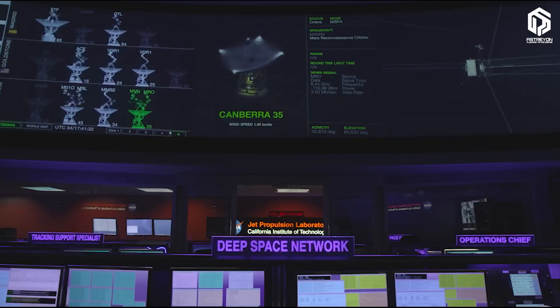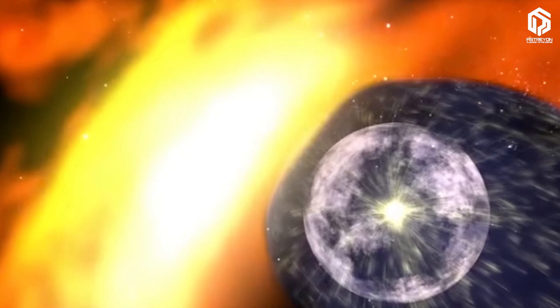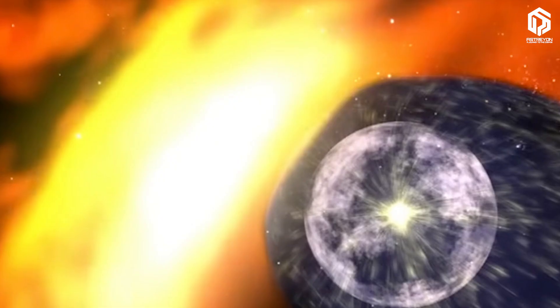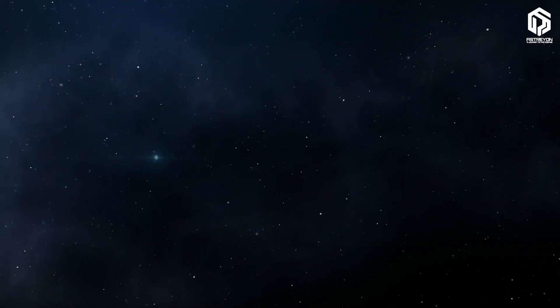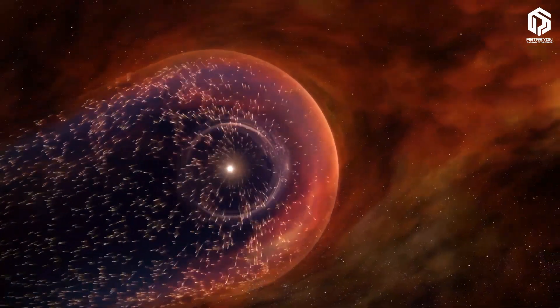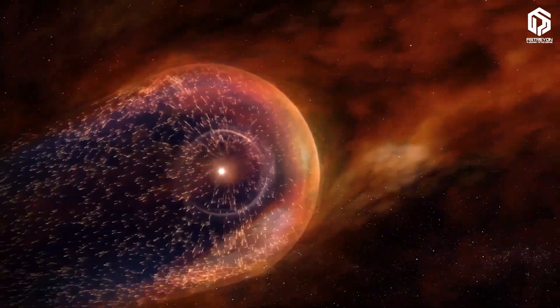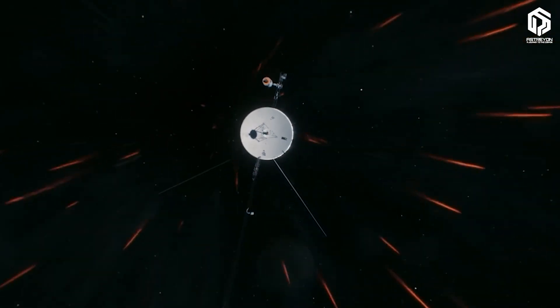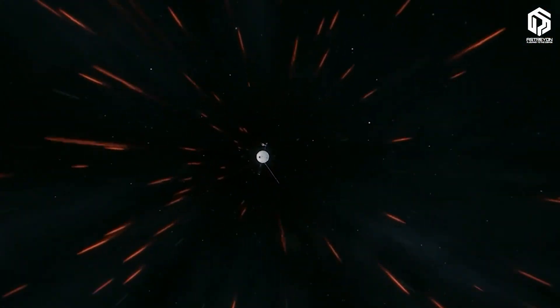And now, we reach the climax: the recent discovery of a wall of fire, or an extremely hot region at the edge of the solar system. This region, with temperatures between 30,000 to 50,000 degrees Celsius, exists without actual fire. Because the particle density is so low that heat doesn't transfer, and Voyager passed through it unharmed.